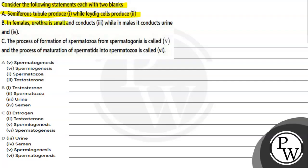Option B: In females, urethra is small and conducts (iii) while in males it conducts urine and (iv). Statement C: The process of formation of spermatozoa from spermatogonia is called (v) and the process of maturation of spermatids into spermatozoa is called (vi). We have 4 different options given with 3 statements and 6 blanks in which we have to know which is most suitable.